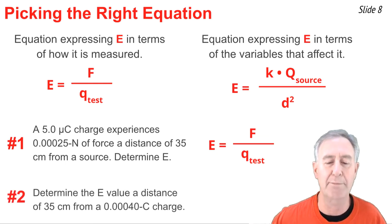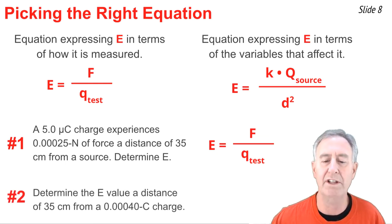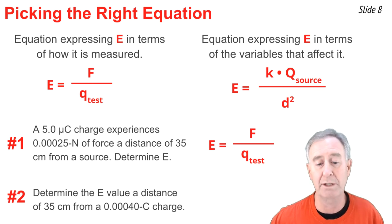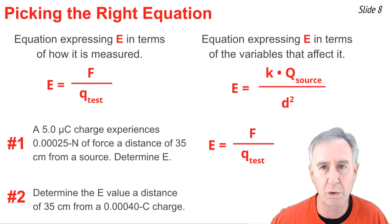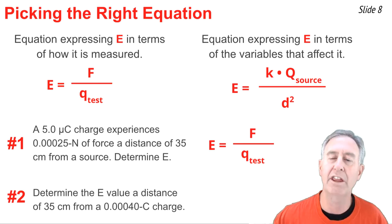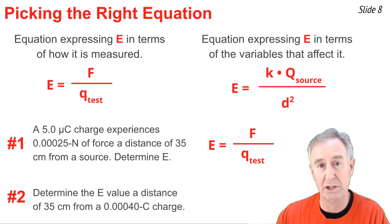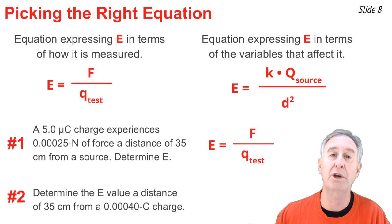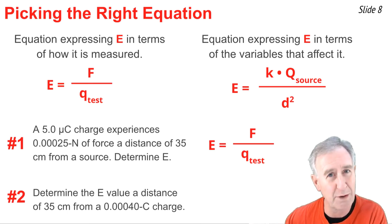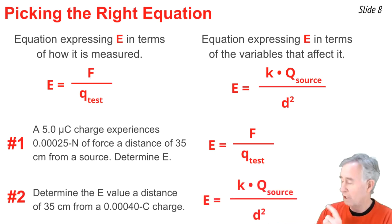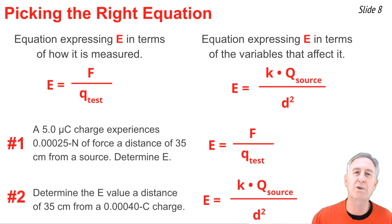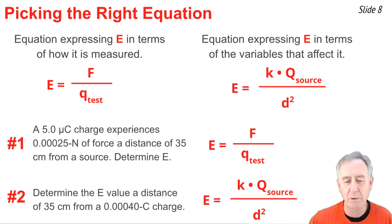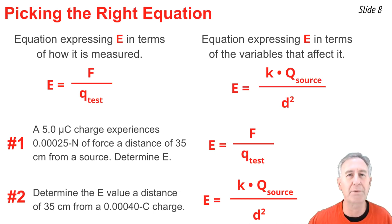Here's a second example: determine the E value at a distance of 35 centimeters from a 0.0040 coulomb charge. Here, this is the source charge — the quantity of charge on the source creating an electric field — and we want to know its value some distance from it. So we use the second equation, E = k·Q_source / d², with Q_source = 0.0040 C and d = 0.35 meters.